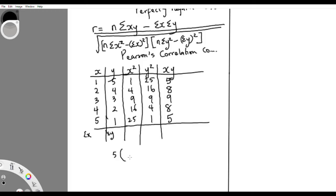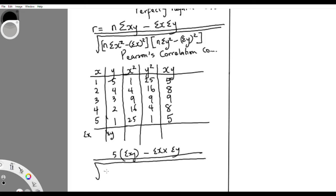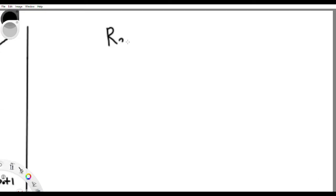Once you have all those values, you plug them into the formula: n times summation XY minus summation X times summation Y, all over the square root of n times summation X-squared minus summation X all squared, times n times summation Y-squared minus summation Y all squared. Solve it and you get R. It is very simple and not difficult at all.